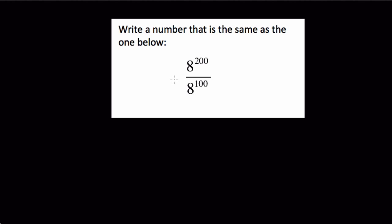However, I think I'm going to use the fact that we have 8 as a base in the numerator and 8 as a base in the denominator to use my laws of exponents. The idea is, if we're dividing these two and they have the same base, we can just subtract the exponents. This will end up being 8 to the 200 minus 100, or 100 power.